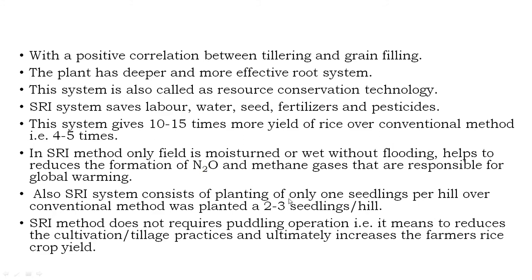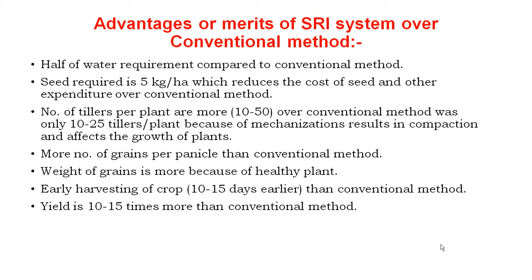SRI consists of planting only one seedling per hill. In conventional methods, two to five seedlings per hill are transplanted. The SRI method does not require puddling operations, which means it reduces tillage practices and ultimately increases the farmer's rice crop yield and income. This concludes the introduction about the System of Rice Intensification.